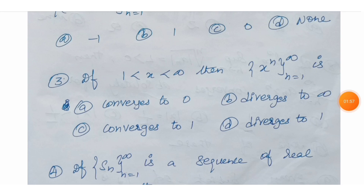Next question: if 1 < x < infinity, then the sequence x^n, n = 1 to infinity. Option A: converges to 0. Option B: diverges to infinity. Option C: converges to 1. Option D: diverges to 1.